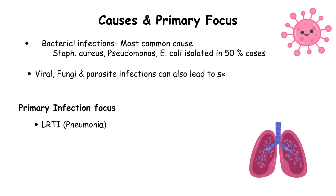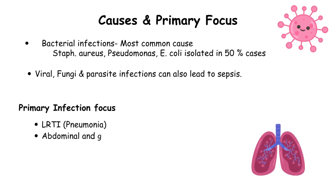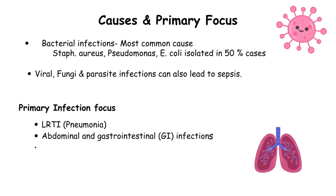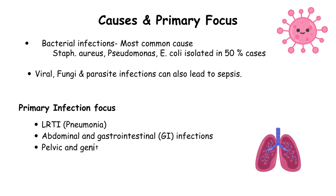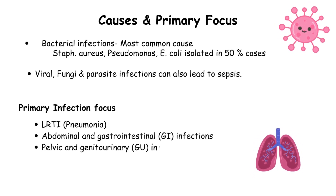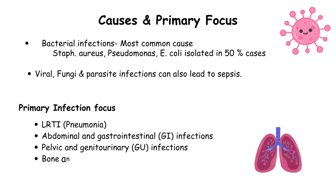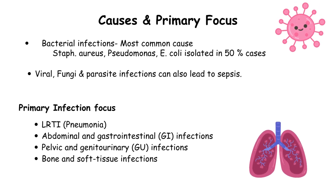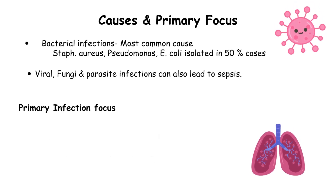Lower respiratory tract infections like pneumonia are the most common cause by primary origin. Abdominal infections and urinary tract infections are other primary origins.